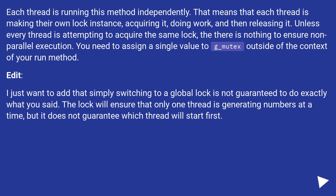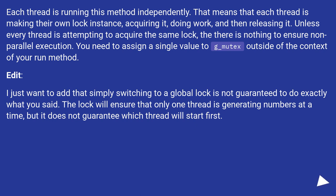You need to assign a single value to g_mutex outside of the context of your run method. Simply switching to a global lock is not guaranteed to do exactly what you want. The lock will ensure that only one thread is generating numbers at a time, but it does not guarantee which thread will start first.